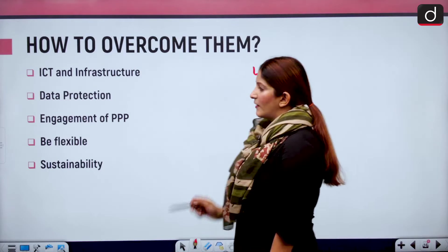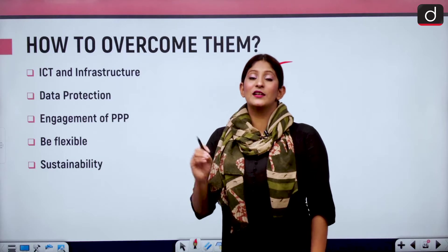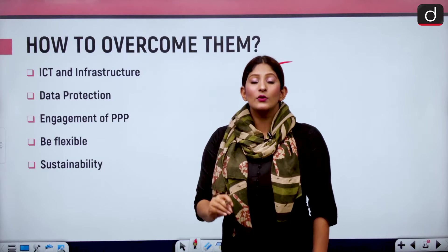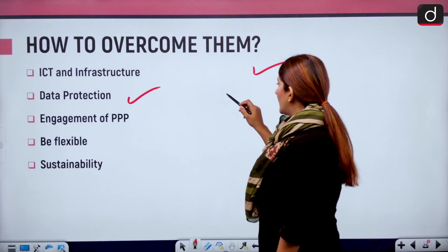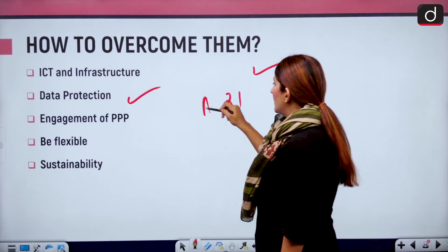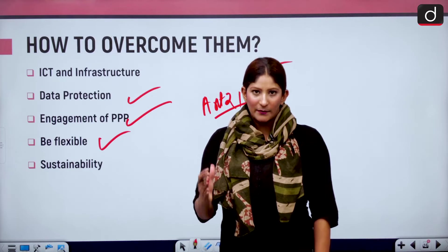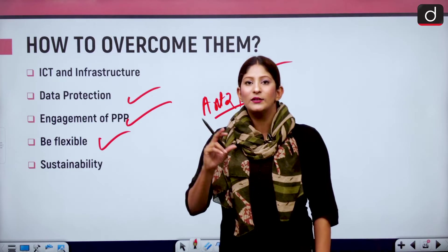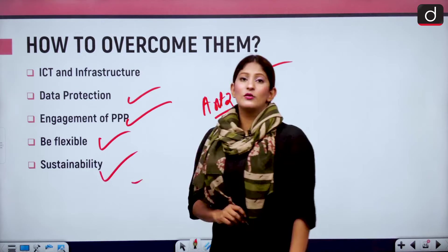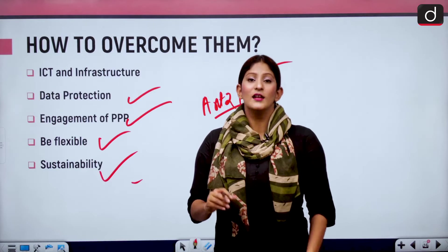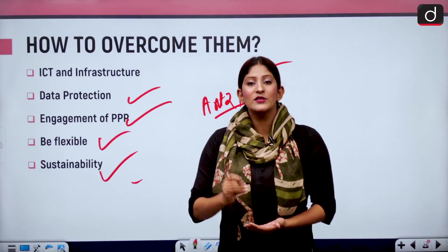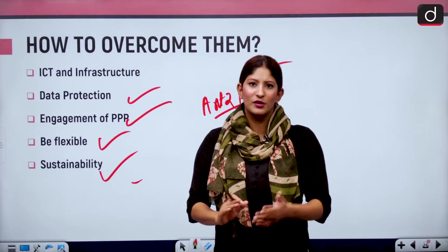To overcome these challenges: ICT infrastructure and physical infrastructure should be integrated so that holistic development can take place. A data protection act should be enacted to respect the right to privacy under Article 21. Public-private partnership is very important to build long-lasting structures. We must gradually enhance our parameters for what constitutes a smart city and remain flexible. Sustainability — not only environmental but social — should be ensured, with equitable distribution of benefits to all sections of society, including the poorest.